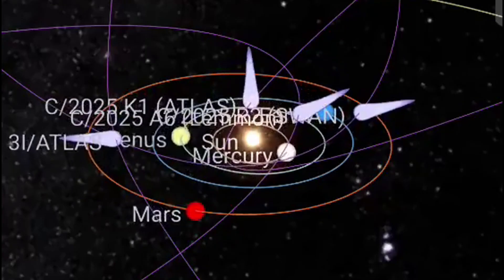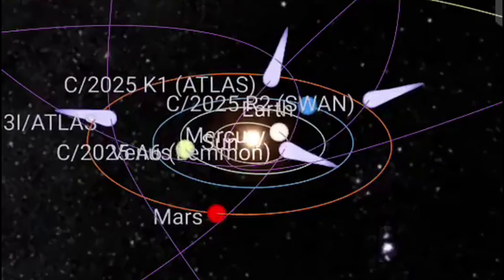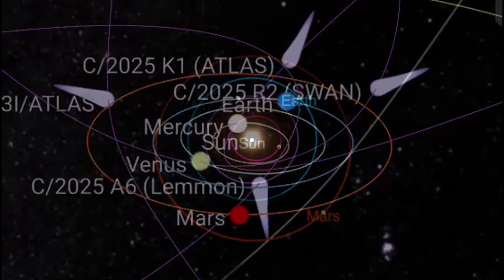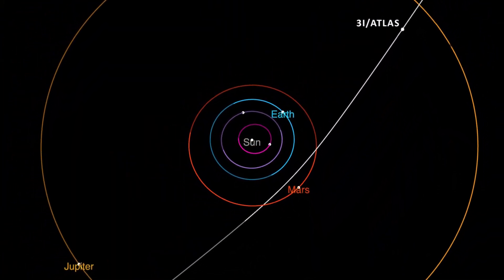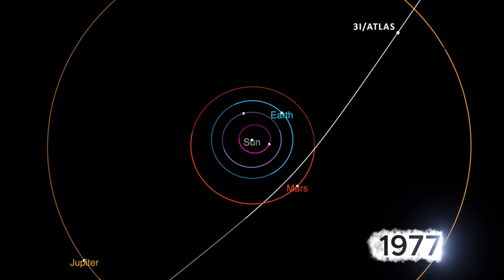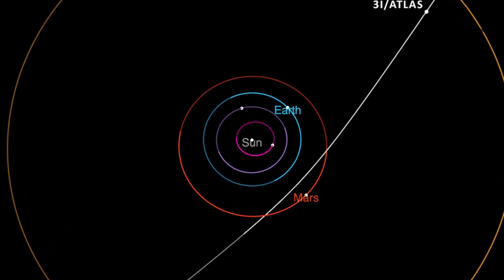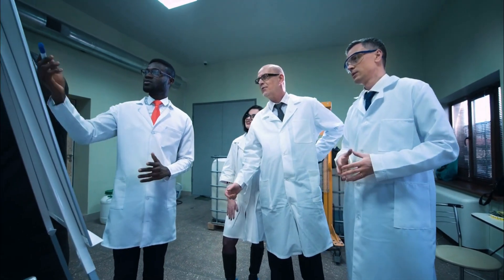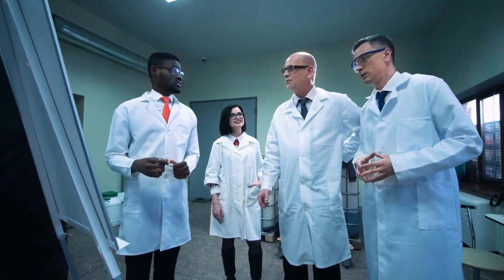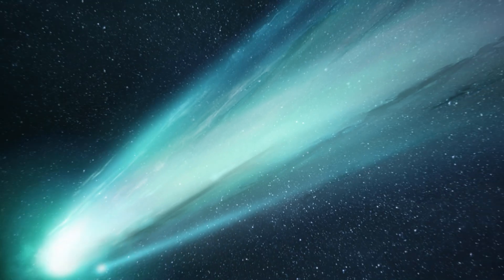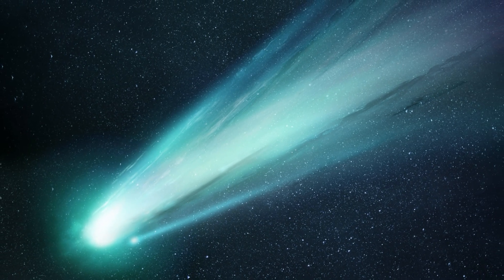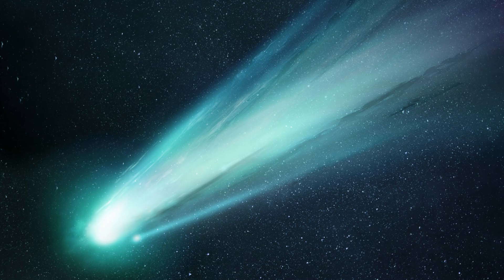Even more unsettling, the direction from which 3i Atlas entered the solar system was within nine degrees of the wow signal, the unexplained 1977 radio burst once suspected to be of extraterrestrial origin. While most scientists dismissed this as mere coincidence, Loeb argued that such alignments deserved scrutiny. He wrote, those who insist 3i Atlas is a typical comet must be held accountable for explaining all of these coincidences through natural processes.